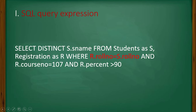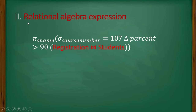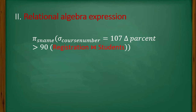Since we are using DISTINCT, it shows unique names, so this is equivalent to the given English query. The next query is the relational algebra expression: π s_name (σ course_number=107 ∧ percent>90 (registration × student)). This is a cross-join operation, and after the join we are selecting where course number equals 107 and percent is greater than 90. Since π always returns unique names, this also gives the same result as the English query.